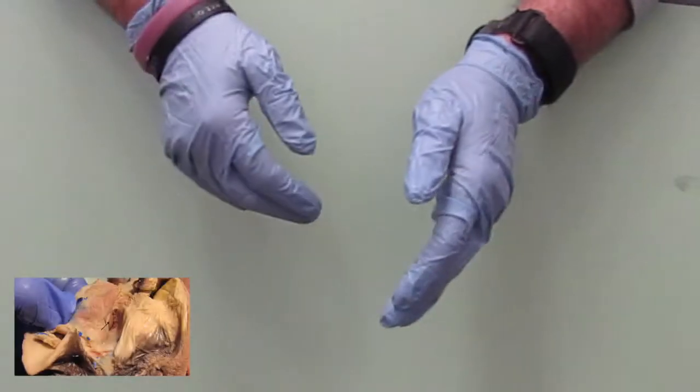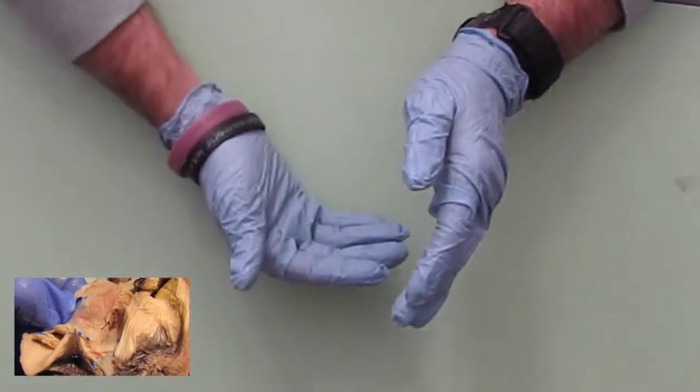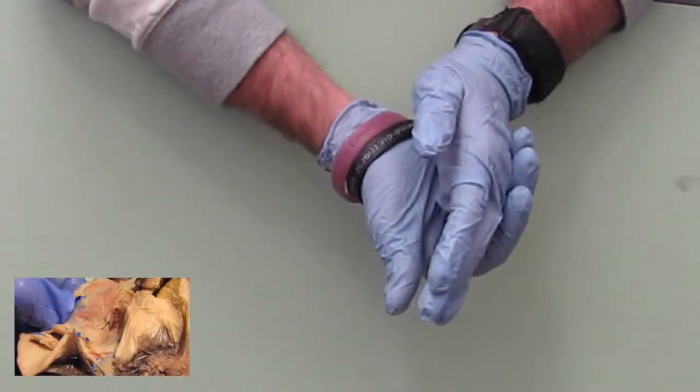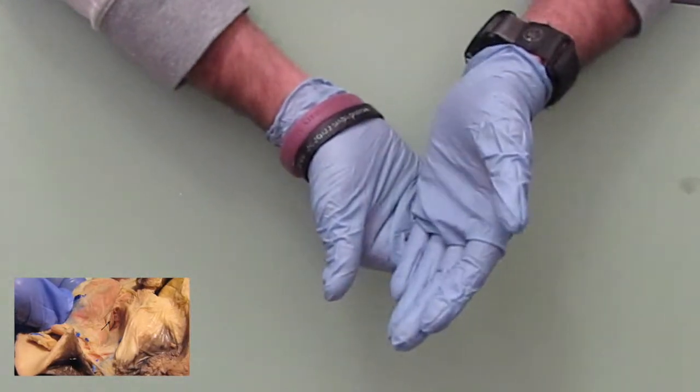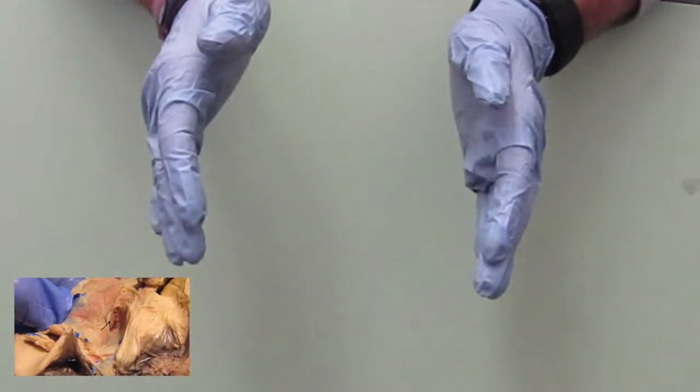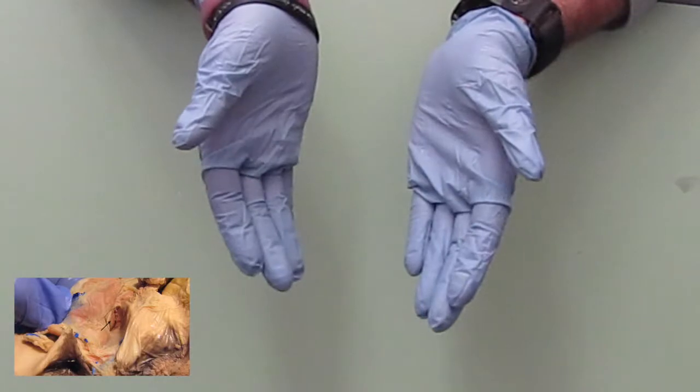Okay, now the cricoarytenoid lateralis. Its fibers come up this way, so when it pulls, it's going to cause closing of the airway.